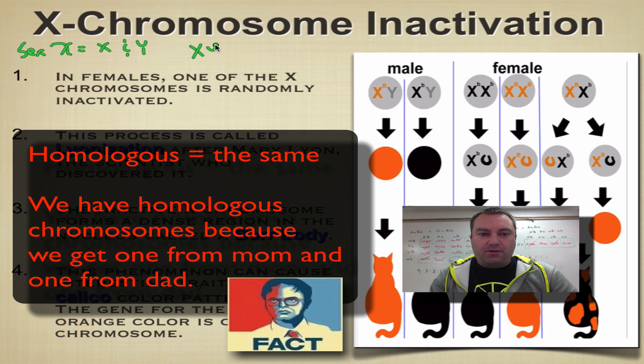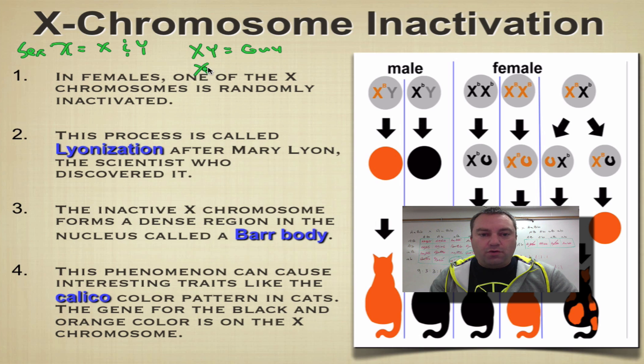If you have an X and a Y, you're a guy. If you have two X's, you're a girl, so that makes you female. It's because this X and Y can pair up, which makes it non-homologous.